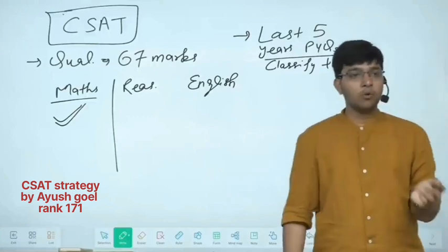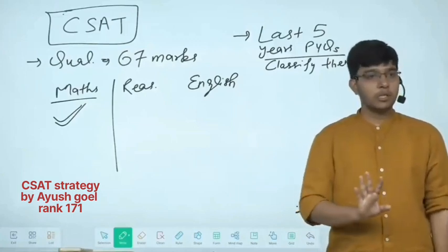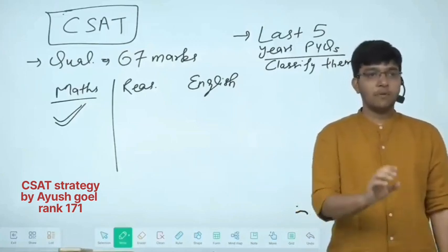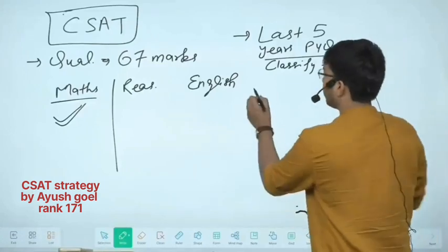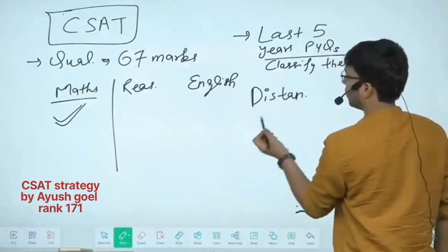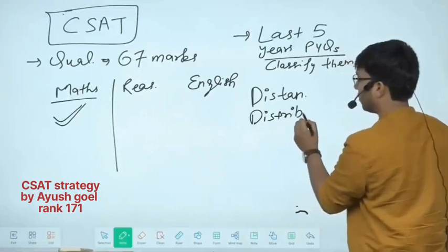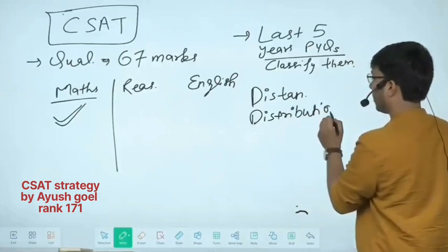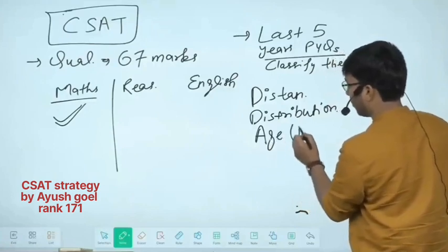Try to attempt something at the start. Generally, there will not be attempts with you, but 20-30% questions will also be attempted. Then look at which topic is going more. The topic of distance and speed time comes a lot. Then the distribution of it comes a lot. I have so many coins and I have so many coins. Then the topic of age, the basic arithmetic comes a lot.